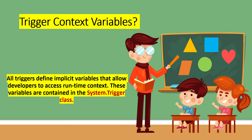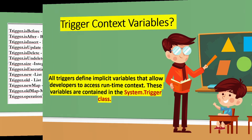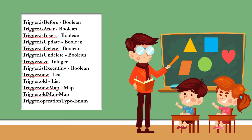What are trigger context variables? All triggers define implicit variables that allow developers to access runtime context. These variables are contained in the System.Trigger class. Examples include: Trigger.isBefore, Trigger.isAfter, Trigger.isInsert, Trigger.isUpdate — these are Boolean data types. Other variables include Trigger.isExecuting, Trigger.new, Trigger.old, Trigger.newMap, Trigger.oldMap, and Trigger.operationType.